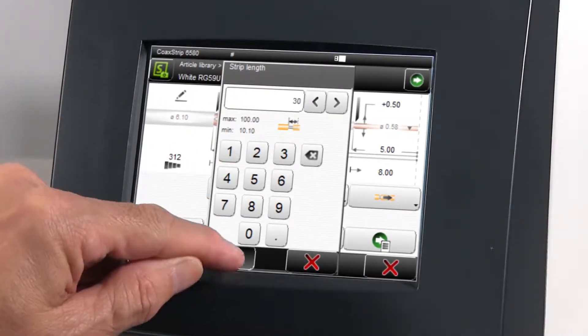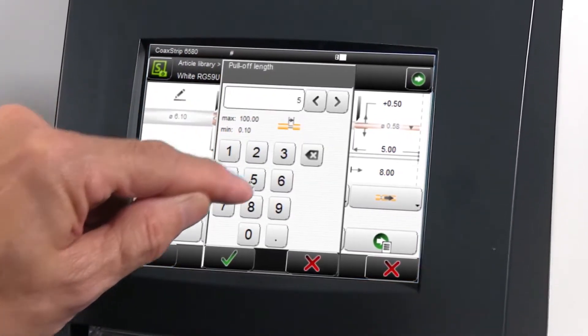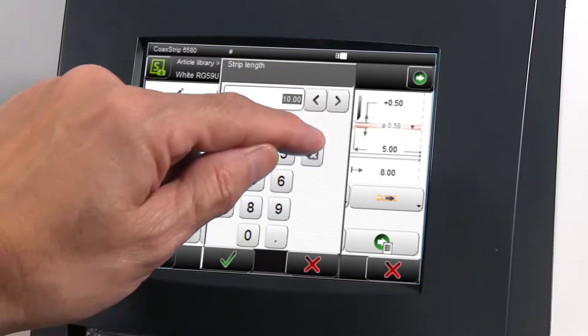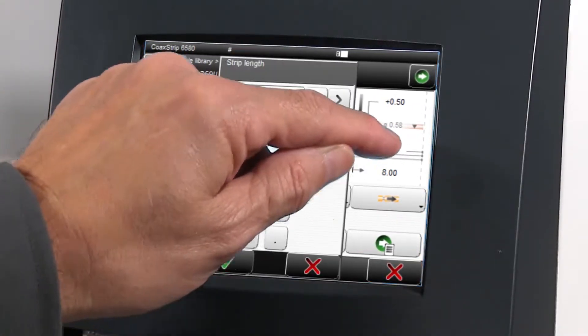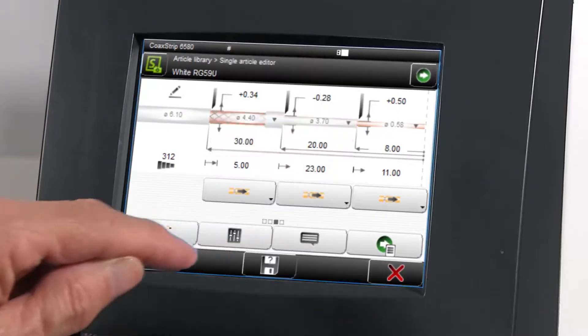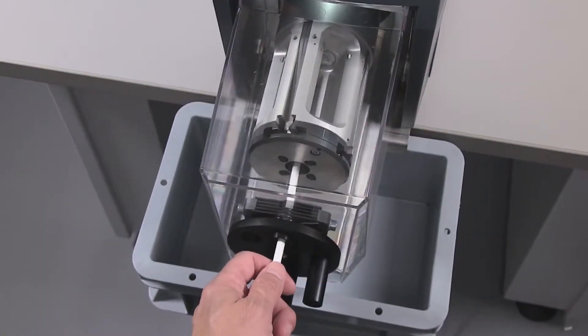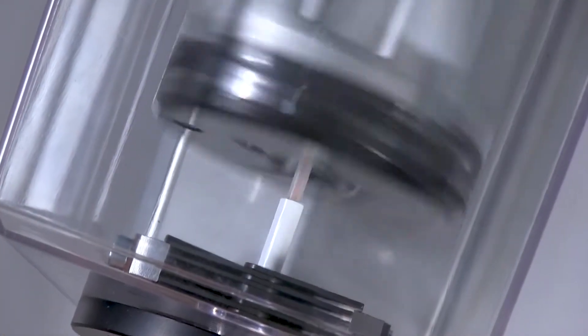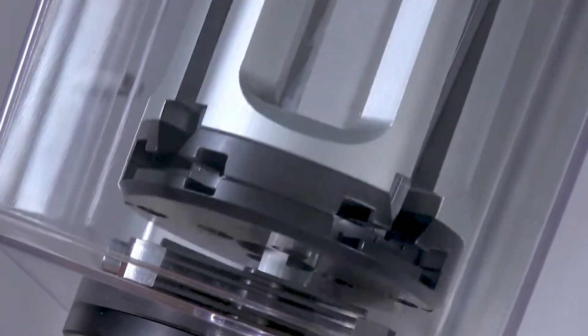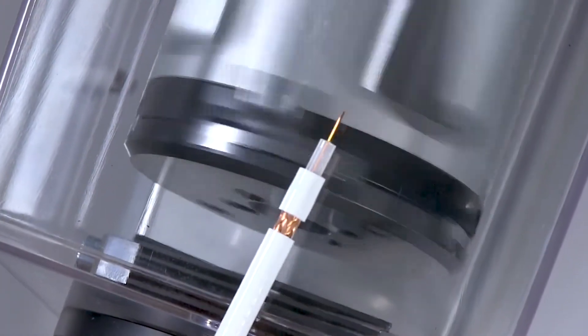This high-performance control software saves raw material data in stored libraries and processing parameters are calculated automatically based on the raw material data. Numerous programmable processing parameters allow for the highest processing flexibility and quality.